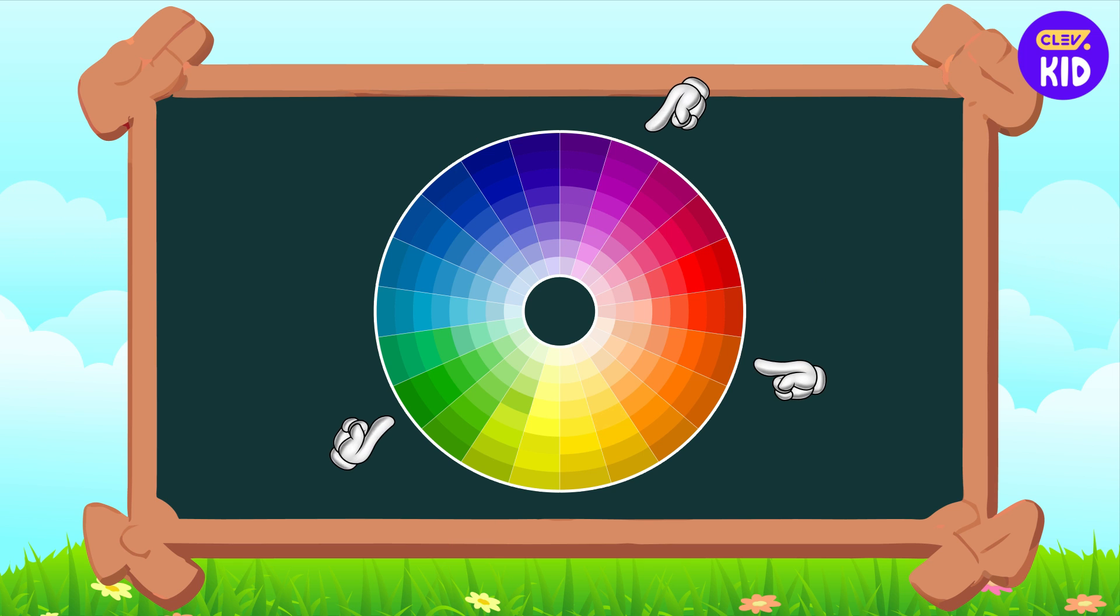The secondary colors green, orange, and purple are located between the primary colors. The tertiary colors fill in the spaces between the primary and secondary colors, blending the shades smoothly.